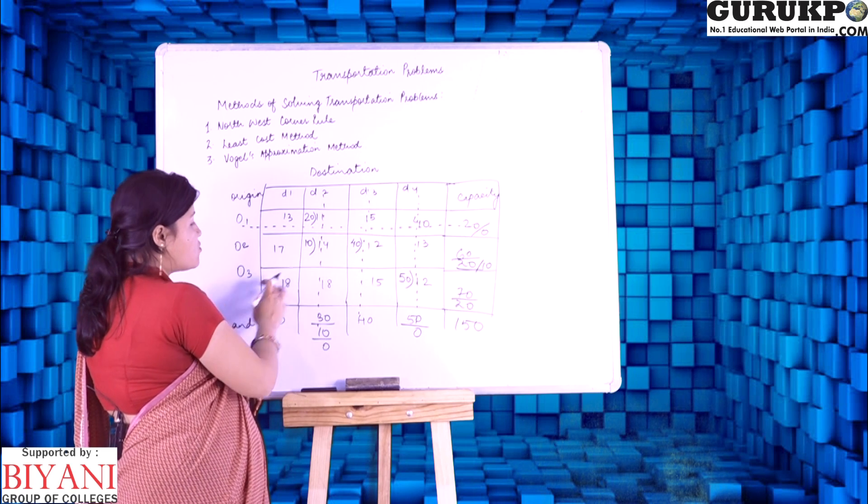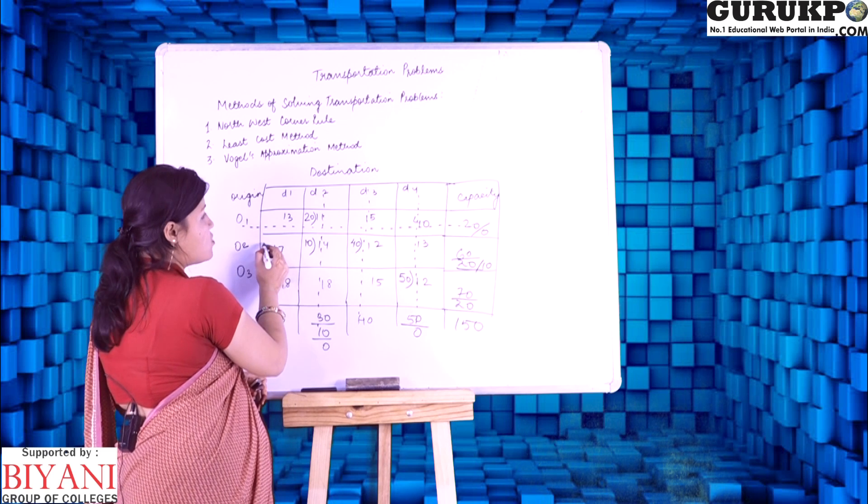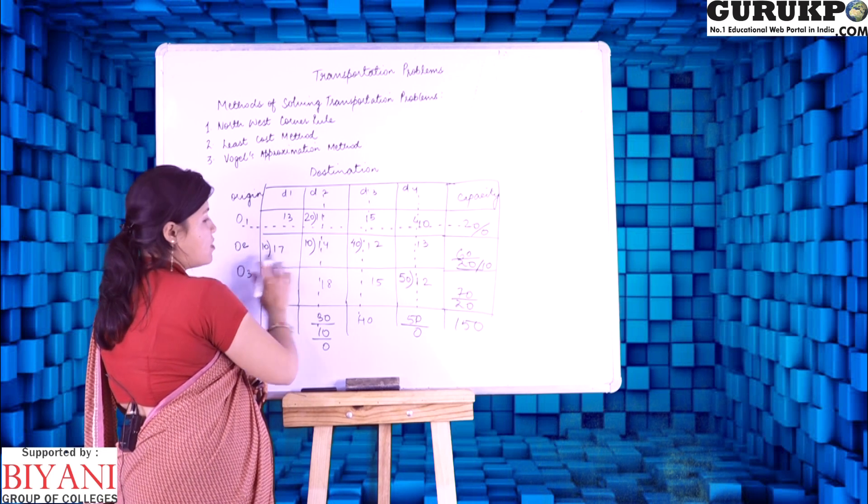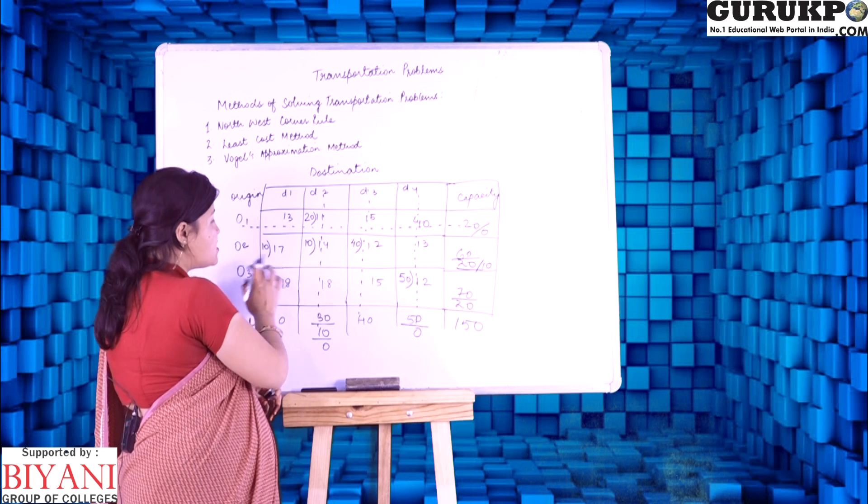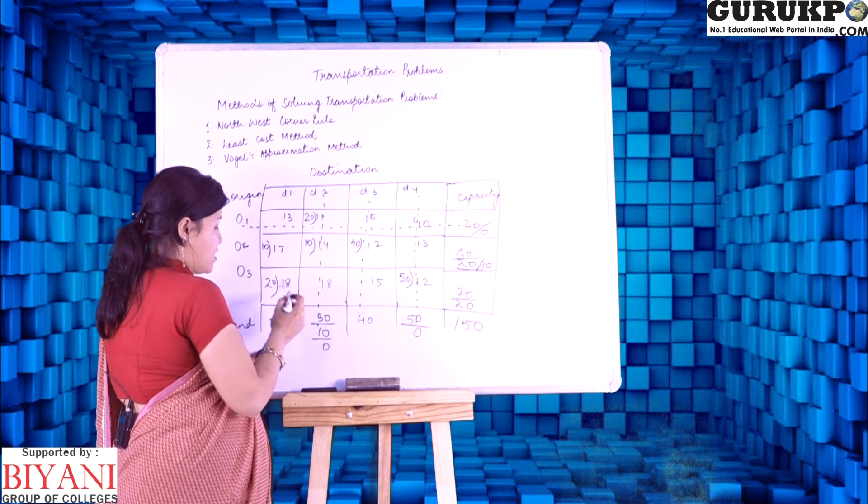Now, from rest of the cost, the remaining is 17, least cost, and the remaining left out amount that is can provide is 10 and here it is 20. So, the allocations are complete.